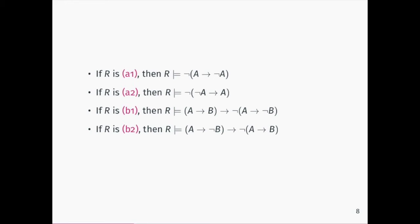The most accepted connective principles in this talk are four principles. The first two are commonly called Aristotle's thesis, which basically says that no formula should imply its own negation. The other two are called Boethius' thesis, which are the constructive form of Aristotle's thesis and state that if a formula is related either with B or its negation, then it cannot be related with the other member of the contrary pair. Our focus will be on these principles — there are many others, and Luis and I have a paper on this.